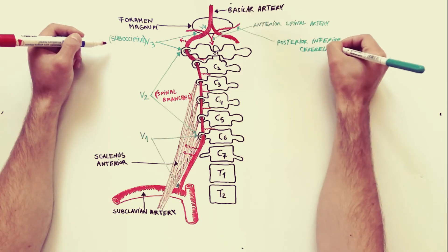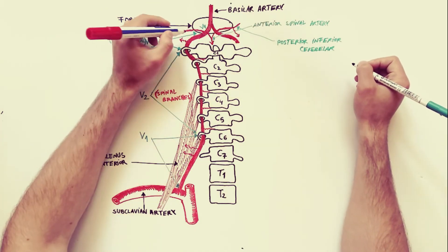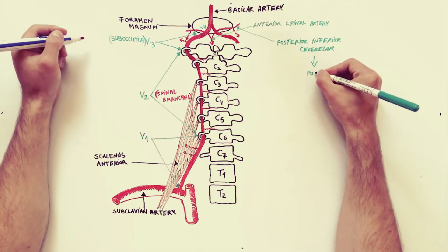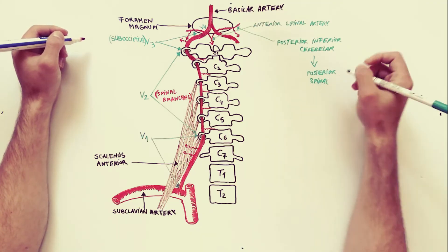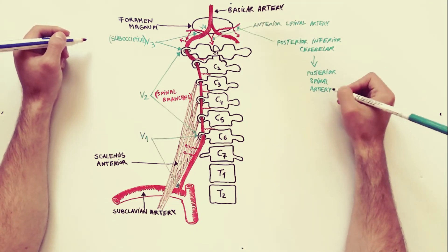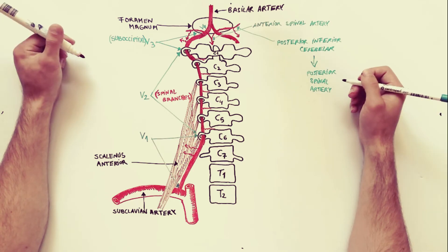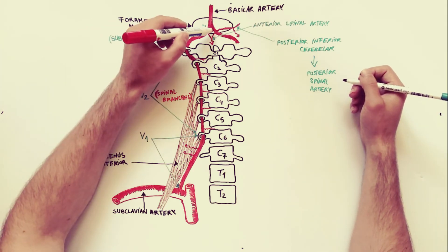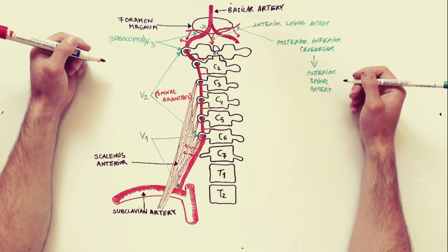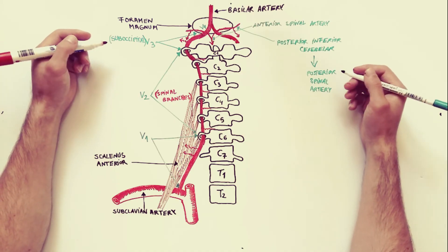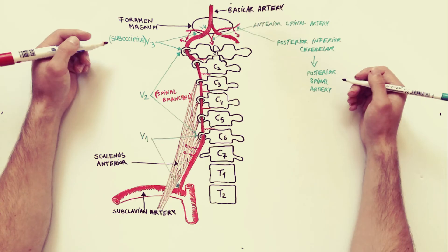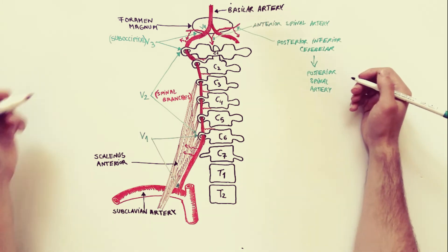From this artery, the posterior inferior cerebellar usually arises the posterior spinal artery. Keep in mind that the posterior spinal artery may arise directly from the fourth part of the vertebral artery. And lastly, let's not forget that the fourth part of the vertebral artery also gives rise to some meningeal and medullary branches.